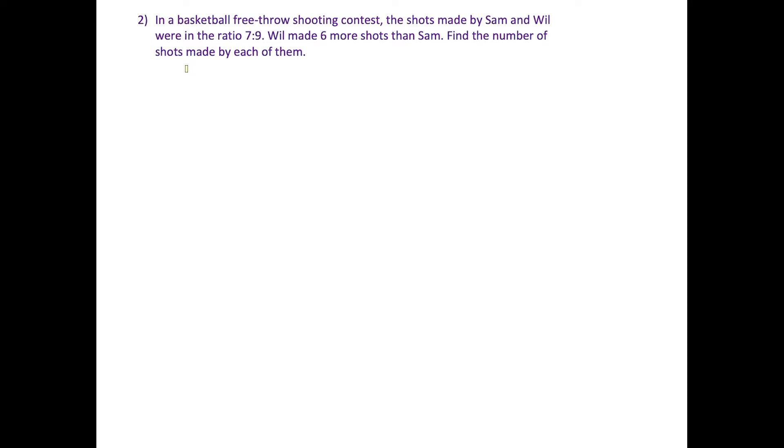Alright, for this last question here, we have a basketball free throw shooting contest. And the two participants are Sam and Will. And they're telling us that for every 7 shots that Sam made, Will made 9. So this is the ratio of their shots, 7 to 9.